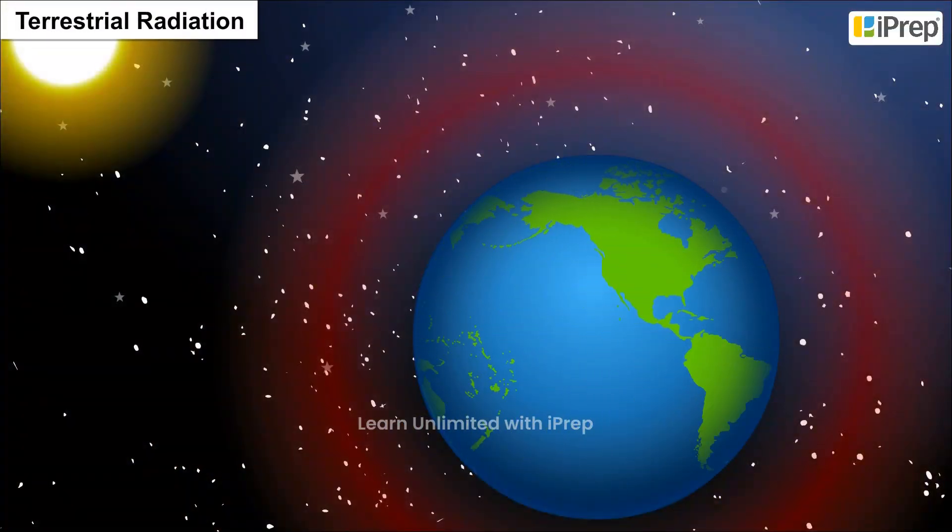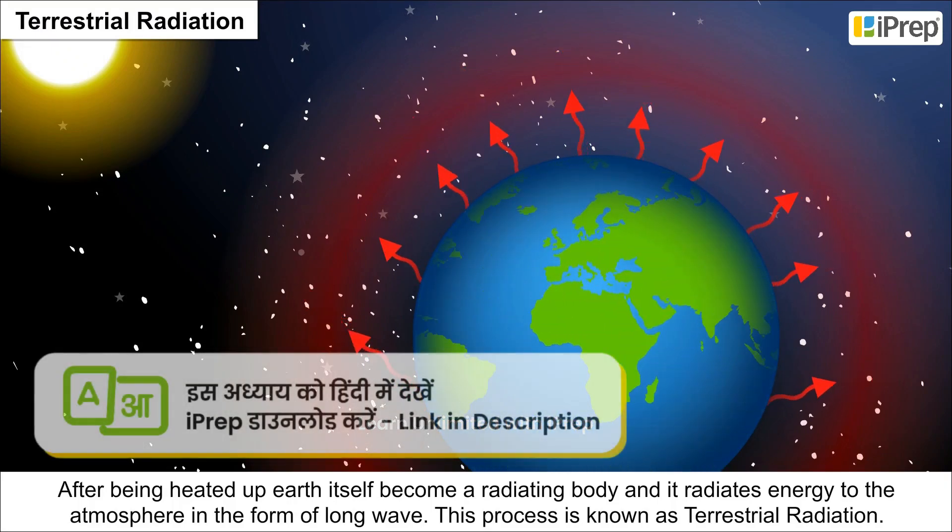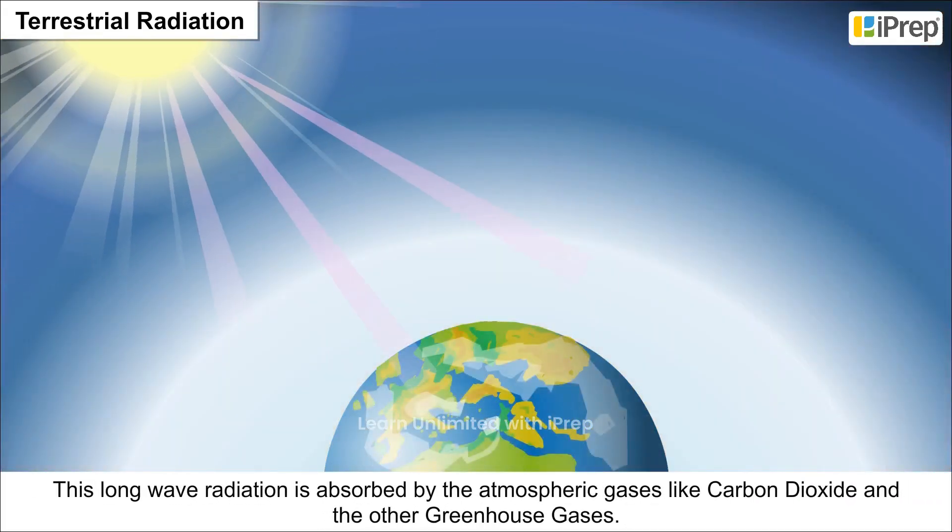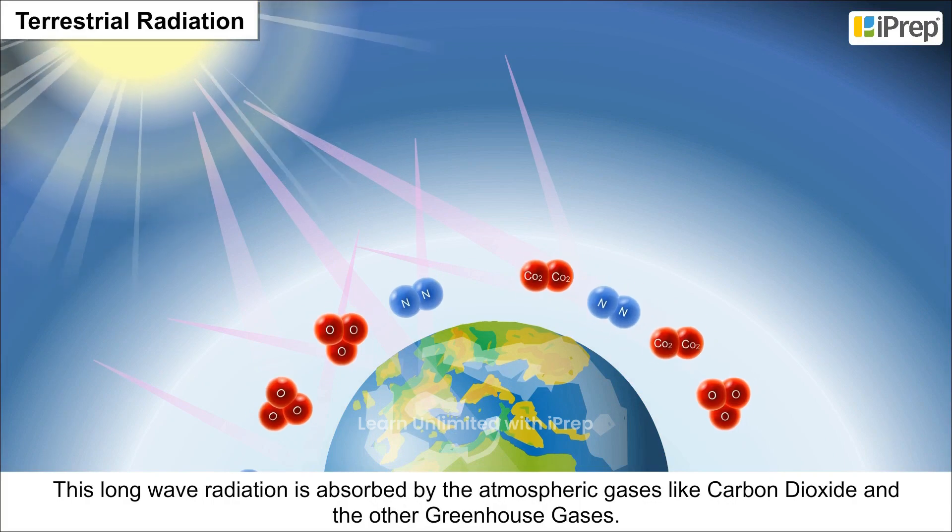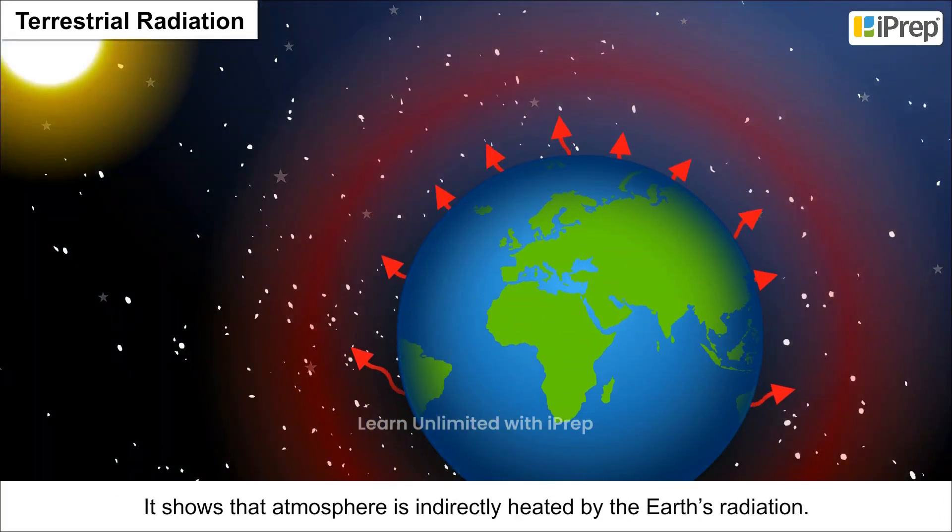Terrestrial Radiation: After being heated up, Earth itself becomes a radiating body and it radiates energy to the atmosphere in the form of long wave. This process is known as Terrestrial Radiation. This long wave radiation is absorbed by the atmospheric gases like carbon dioxide and other greenhouse gases. It shows that atmosphere is indirectly heated by the Earth's radiation.